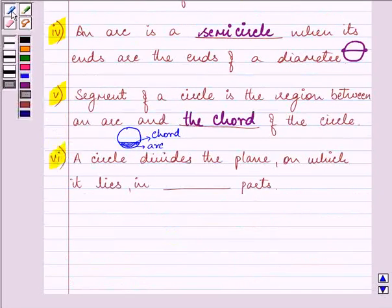sixth part, a circle divides the plane on which it lies in three parts. So the answer is three parts.